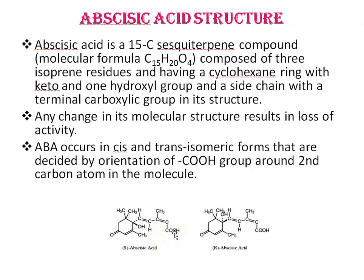Any change in its molecular structure results in loss of activity. ABA occurs in cis and trans isomeric forms that are decided by the orientation of the COOH group around the second carbon atom in the molecule. Almost all naturally occurring ABA in plants exists in cis form, which is the biologically active form, and the name abscisic acid usually refers to this form only. Trans-ABA is the inactive form but can be interconvertible with cis-ABA.